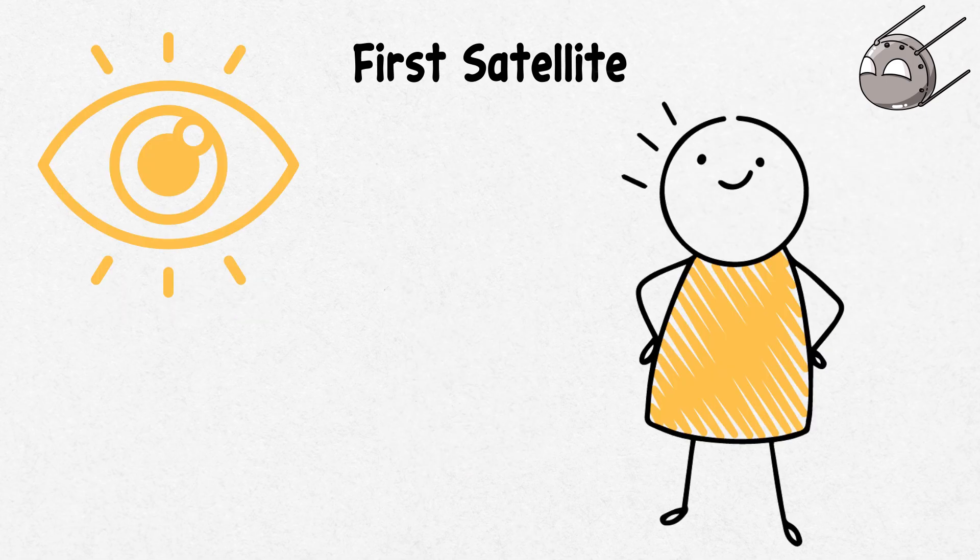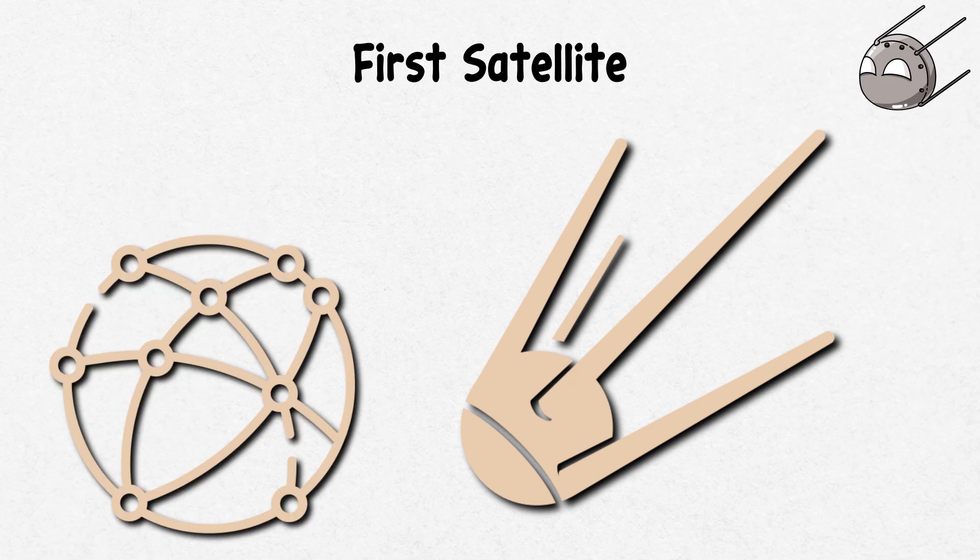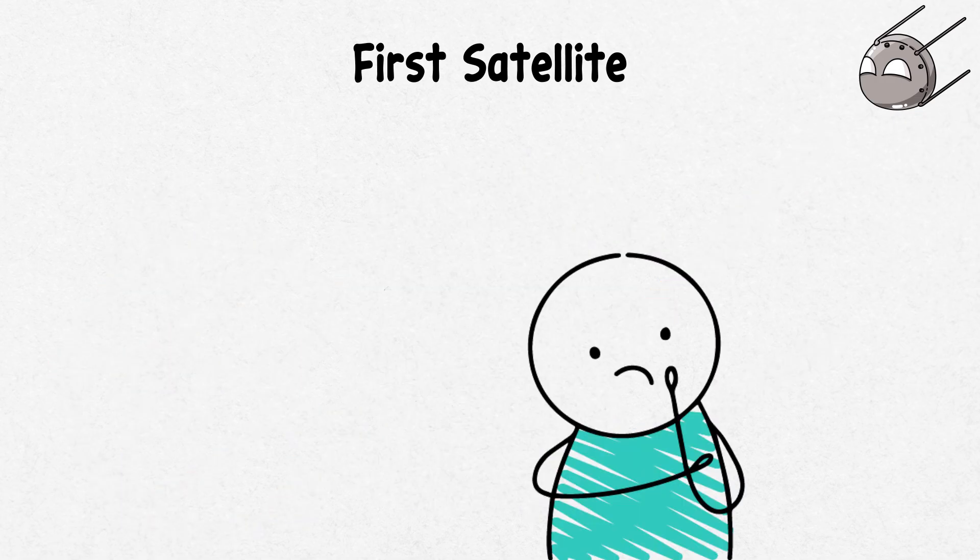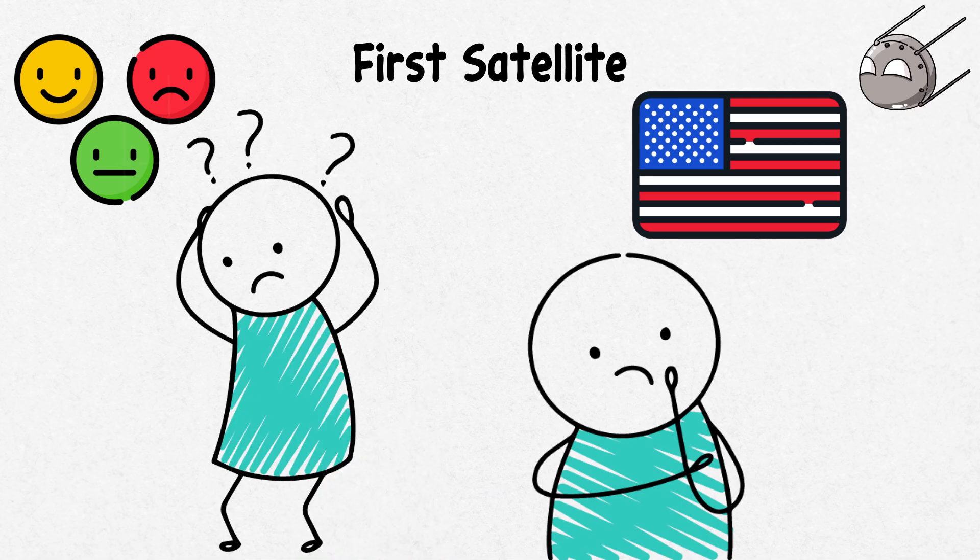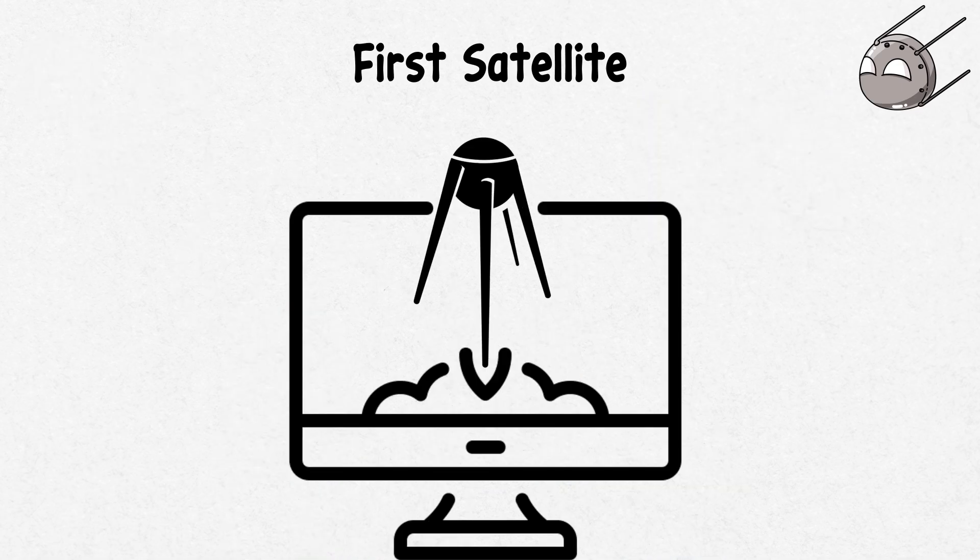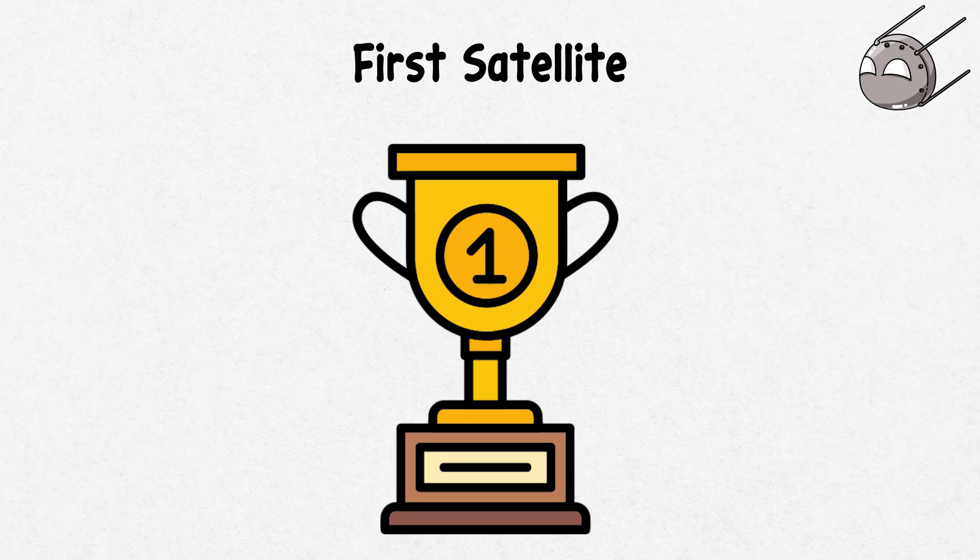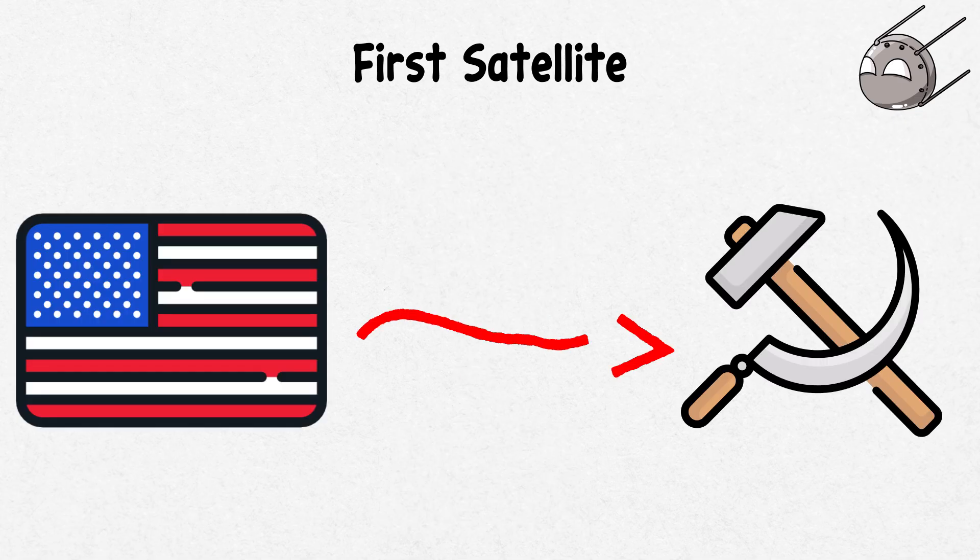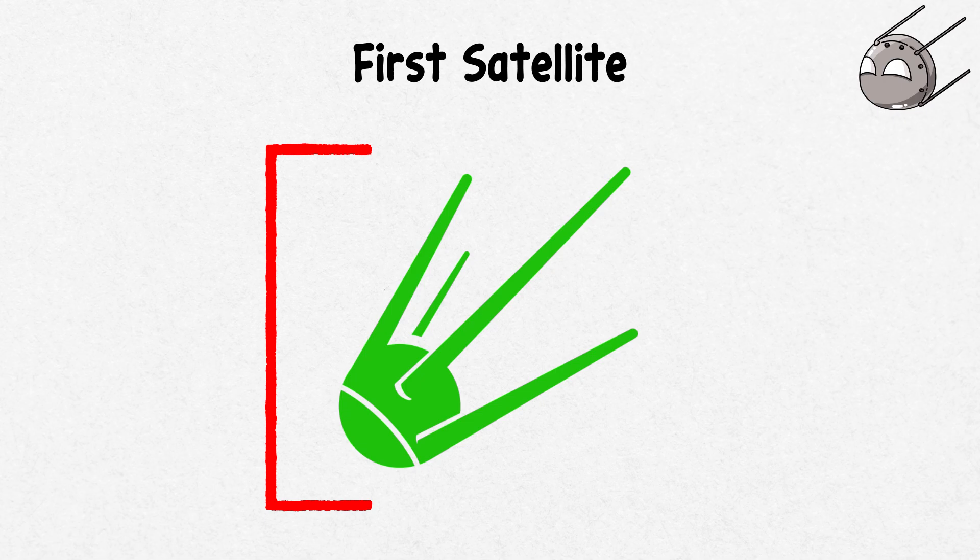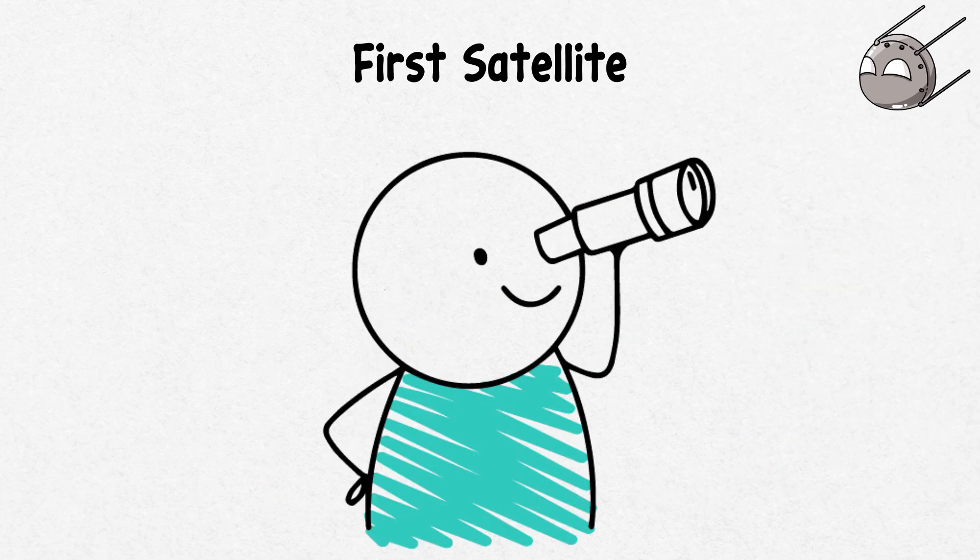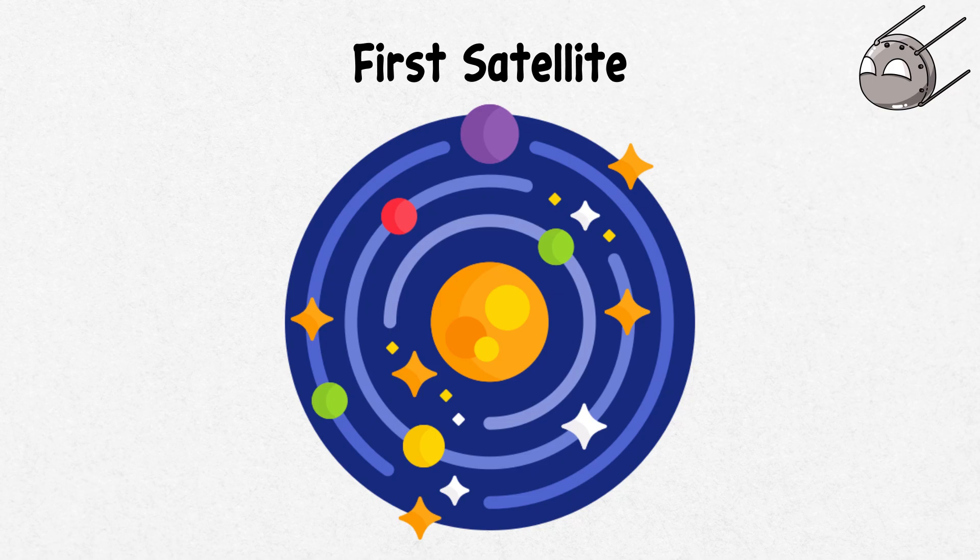People everywhere were tuning in, listening to the first human-made object communicating from space. It was both strange and exciting. In the United States, the reaction was a mix of shock and fascination. The launch marked the beginning of the space race, an interesting competition between the US and the USSR to explore space. Sputnik 1 might have been small, but its impact was great, signaling the beginning of a new era in human history, where the space age officially began.